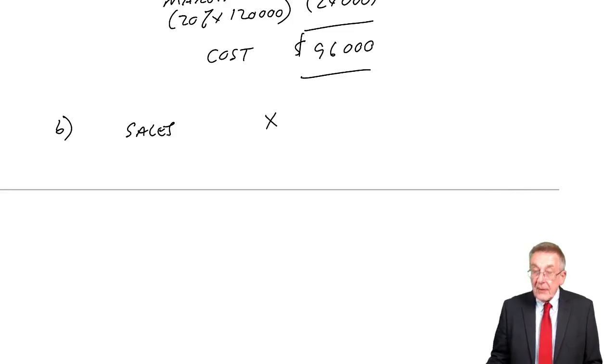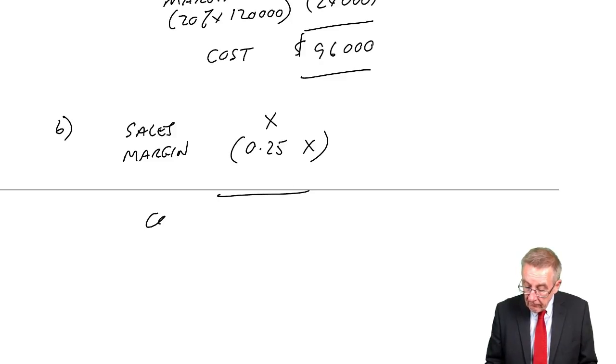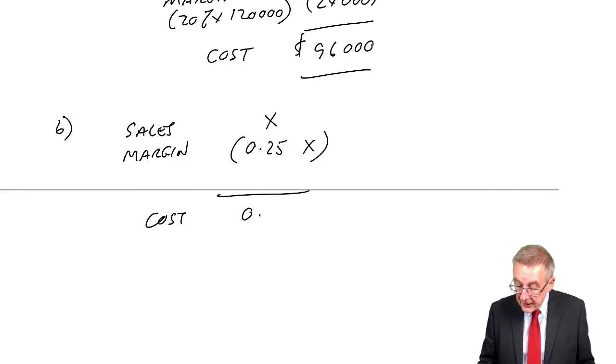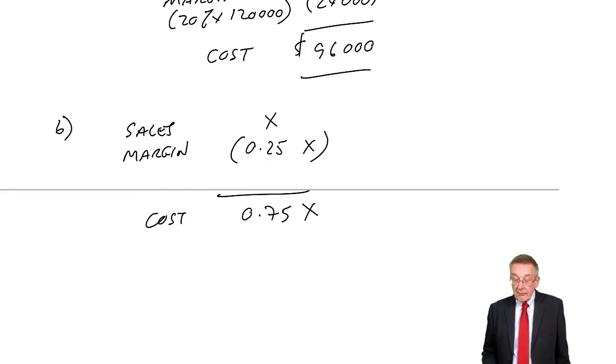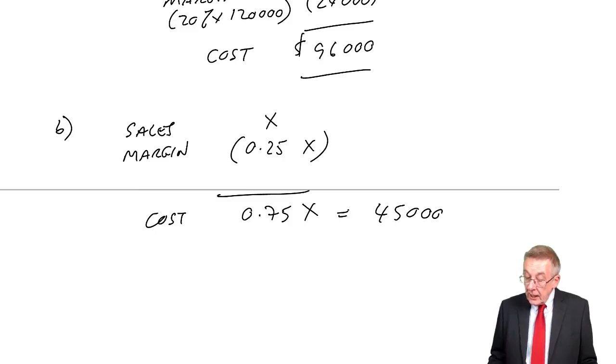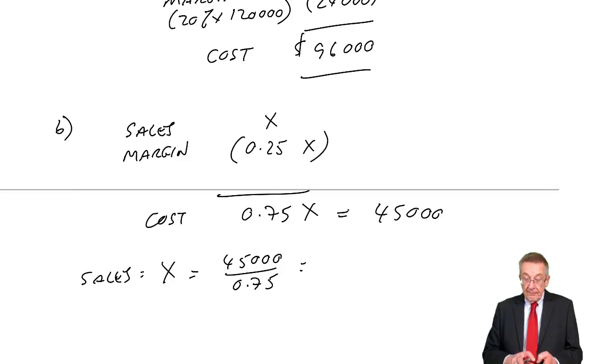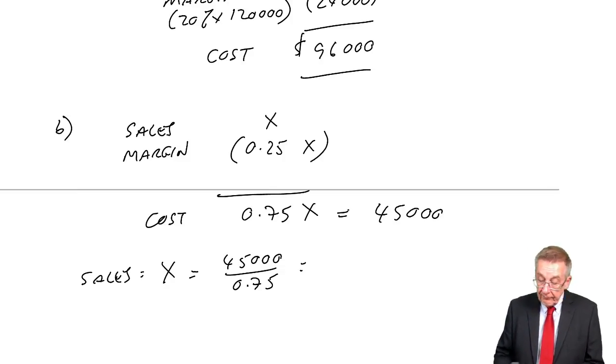If the sales are X, the margin, the profit, will be 25% of X or 0.25 of X. And therefore, the cost, the sales less the profit, 1X minus 0.25 of X is 0.75 of X. We know what the cost is. It's equal to 45,000. And so, X, 45,000 divided by 0.75, which is the sales, remember, is 60,000.